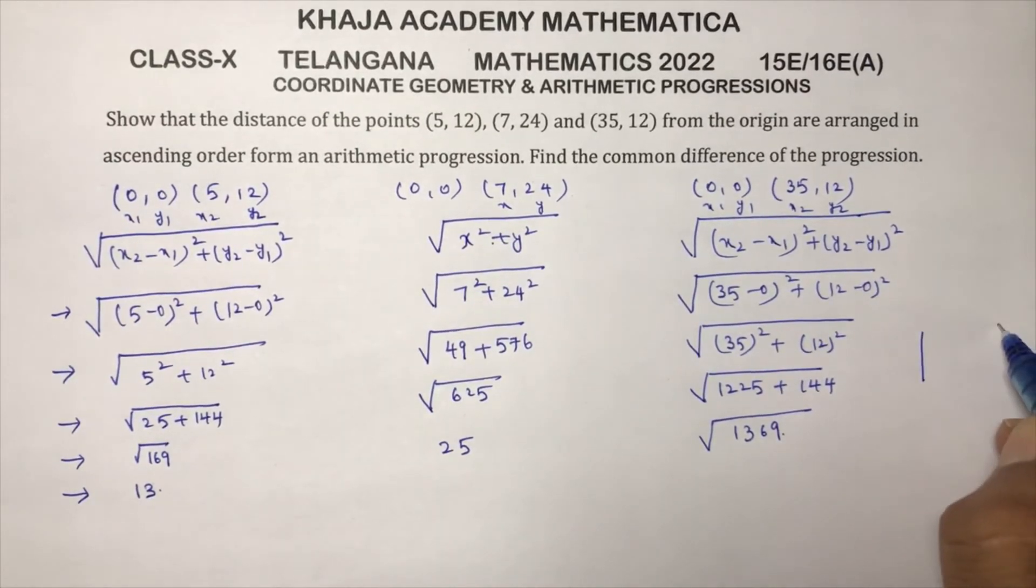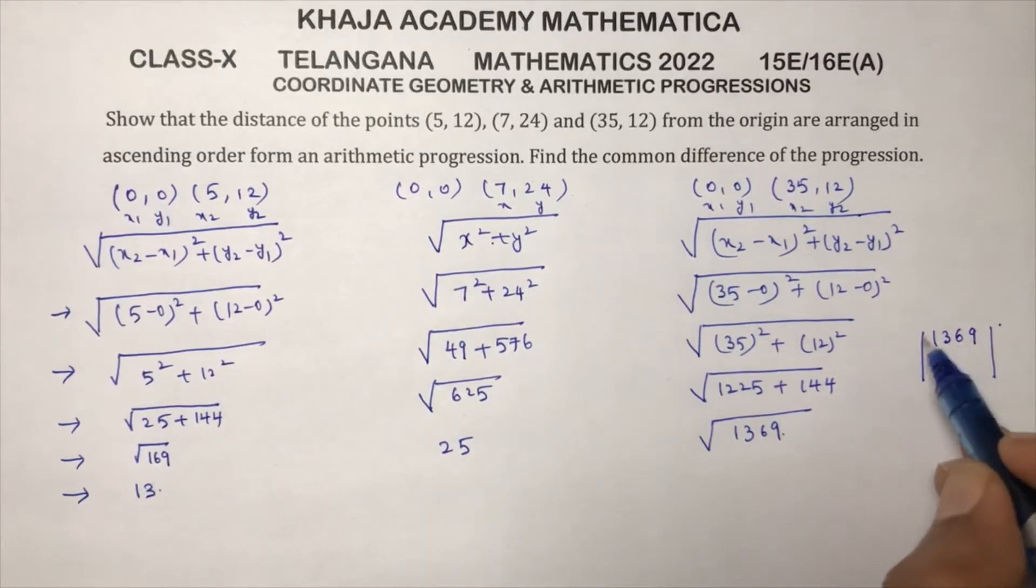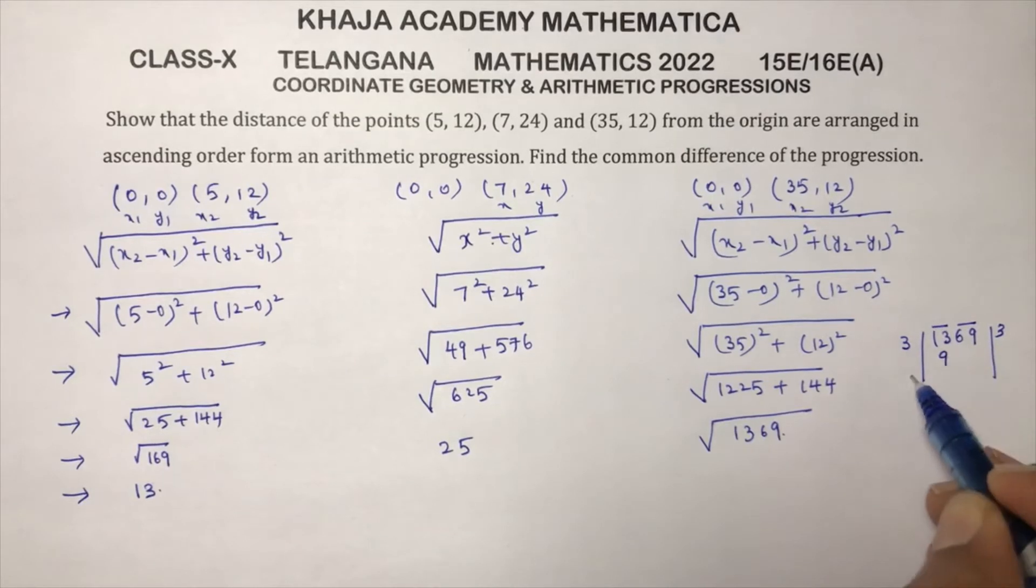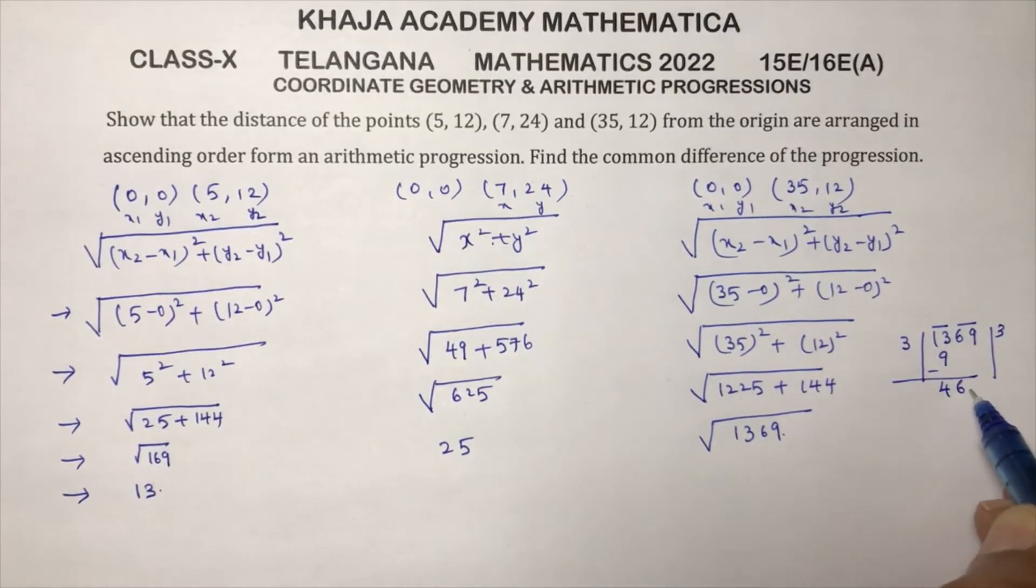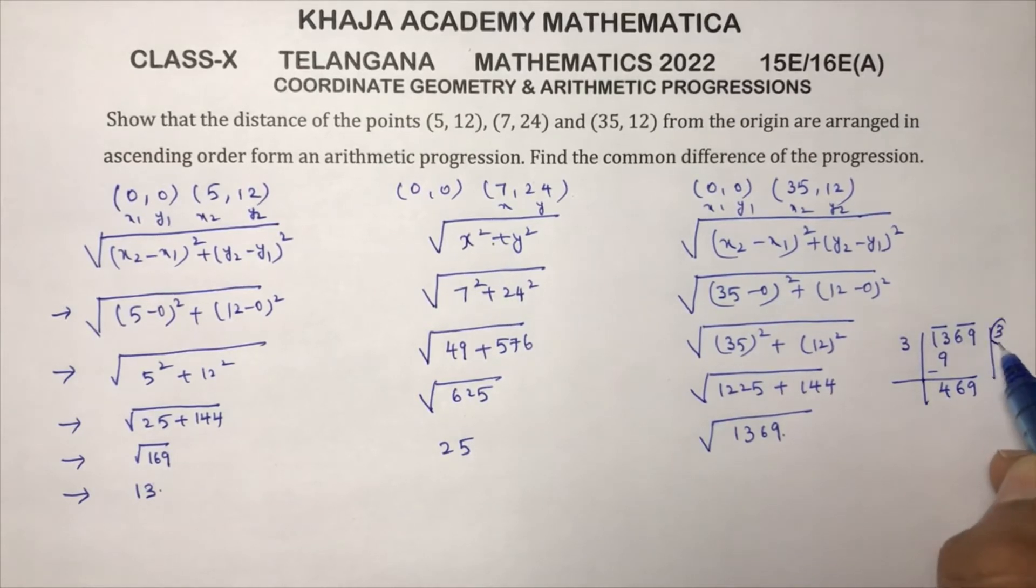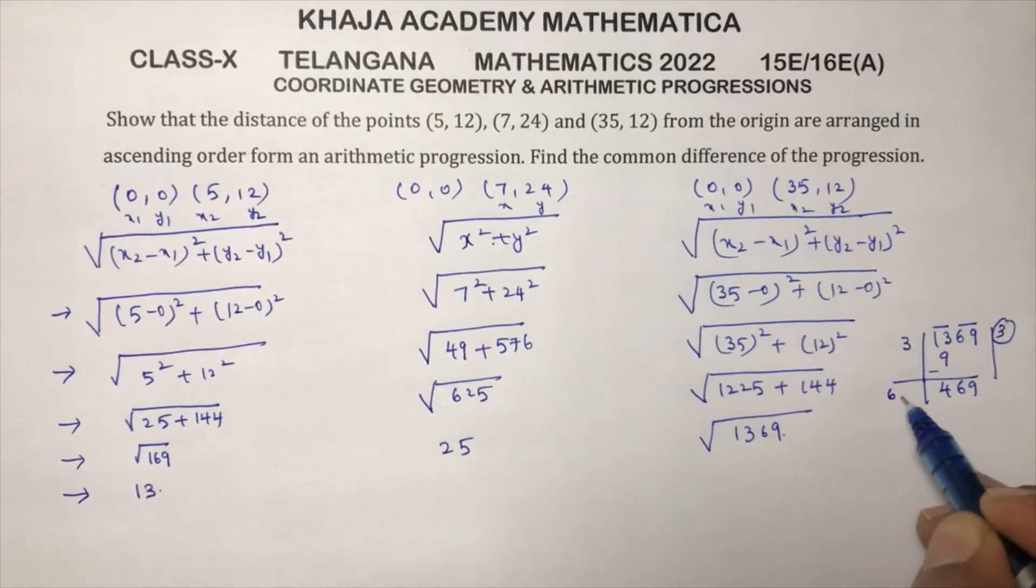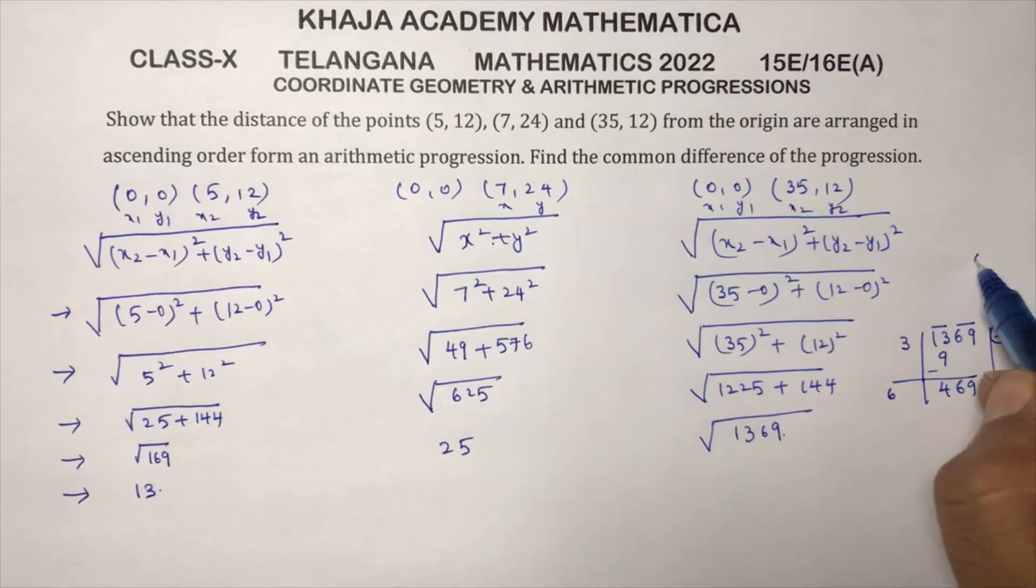So now we need to find the square root of 1369. So I'll do by using this division method: 1369, three times three two digits, three times three is nine.